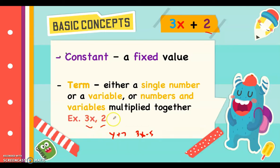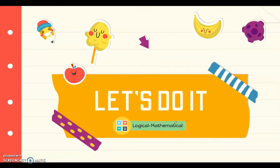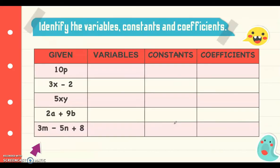Let's see if we understand basic concepts in algebra by identifying variables, constants, and coefficients. Starting with 10p: the variable is p, because it is a letter representing an unknown value. There is no constant because there is no fixed value here. The coefficient is 10, since any number multiplied by the variable is the numerical coefficient.